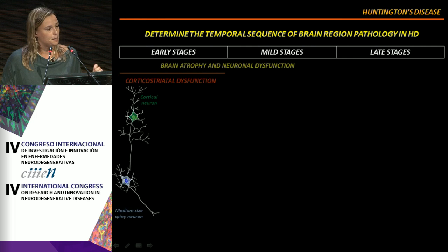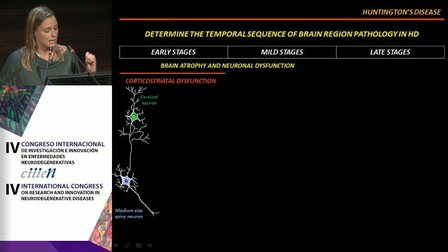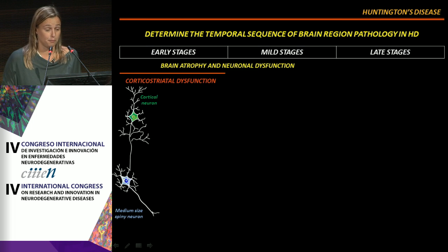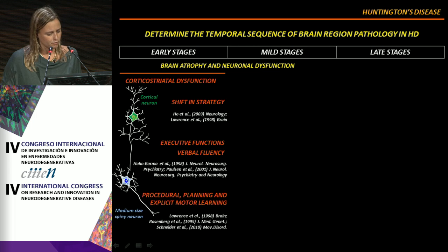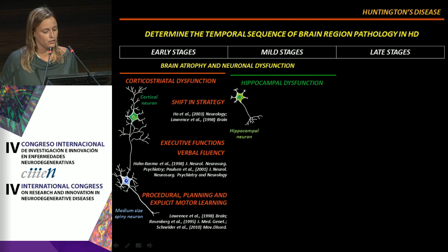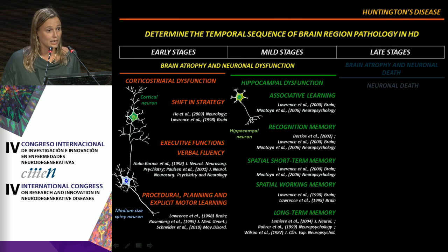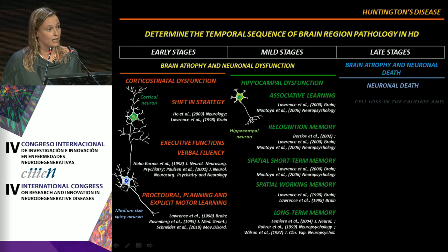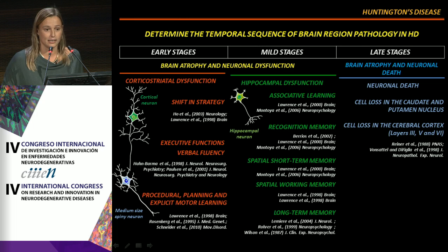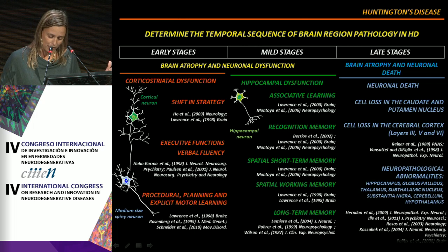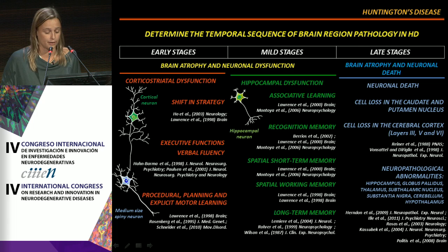In HD patients, the corticostriatal pathway is severely impaired at early disease stages. Hippocampal dysfunction is altered at mild disease stages and later in disease progression, neuronal death in the basal ganglia, cerebral cortex, and abnormalities in other brain regions appear.